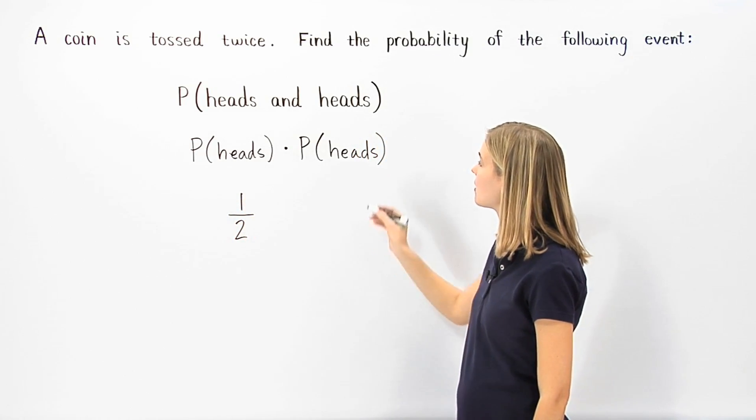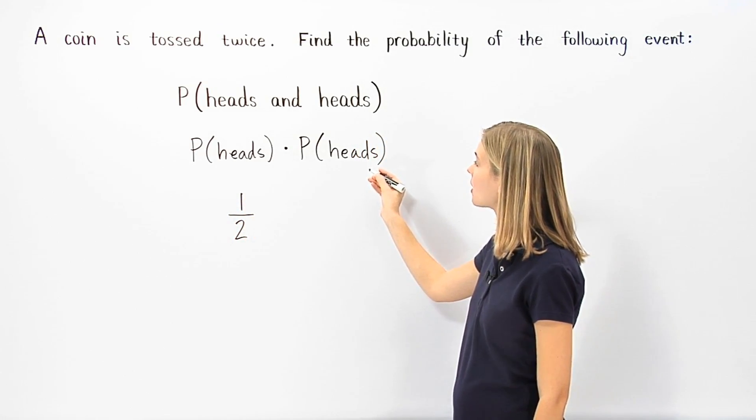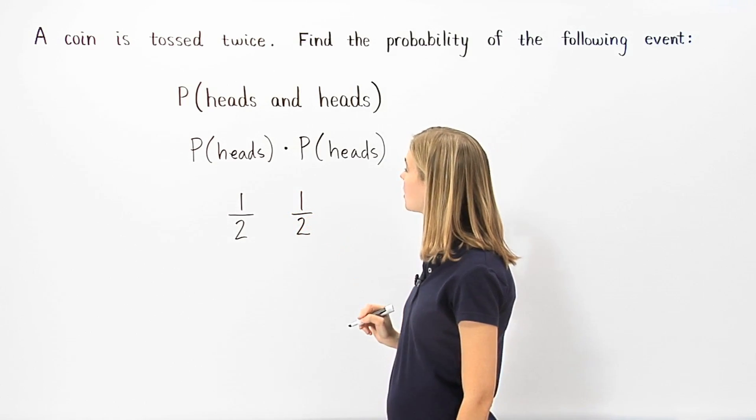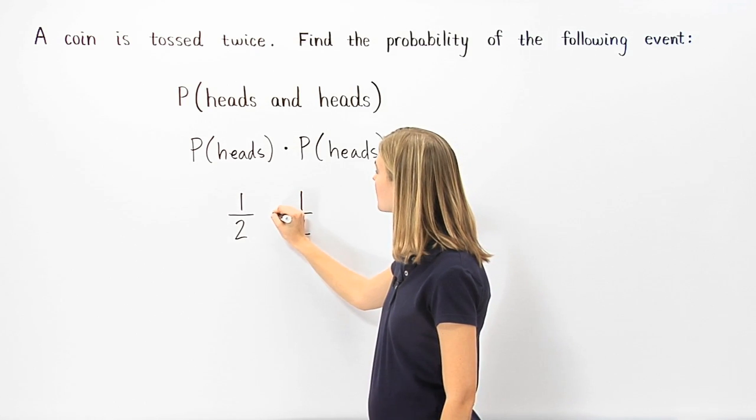Next, let's find the probability of getting heads on our second coin toss, which would also be one half. So we have one half times one half.